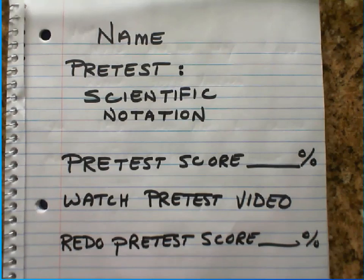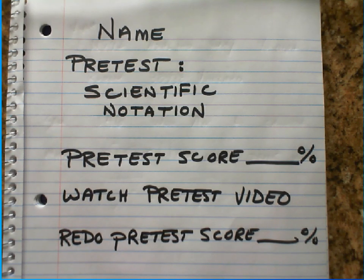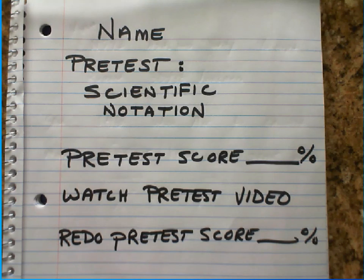Alright, so those are the notes. Name, pre-test, Scientific Notation. You're gonna take the pre-test. Don't use any help. You may use the calculator if you want to. Then you can watch the pre-test video and then you're gonna redo the pre-test. That's it. Thanks for watchin'.